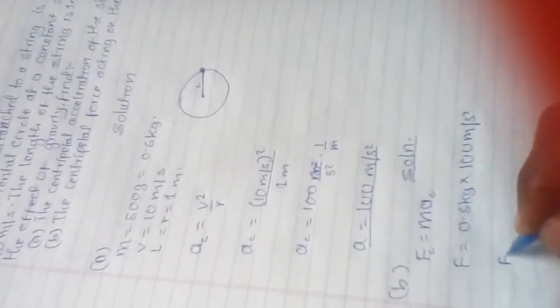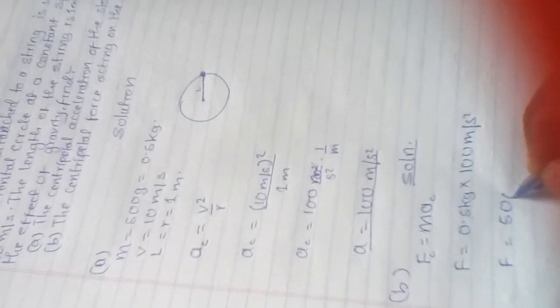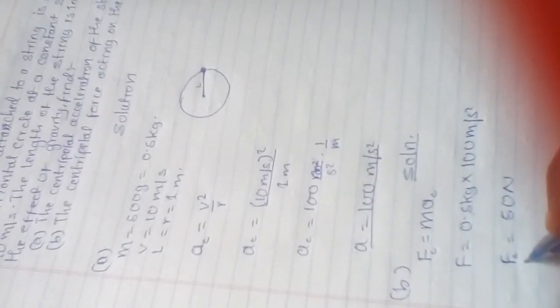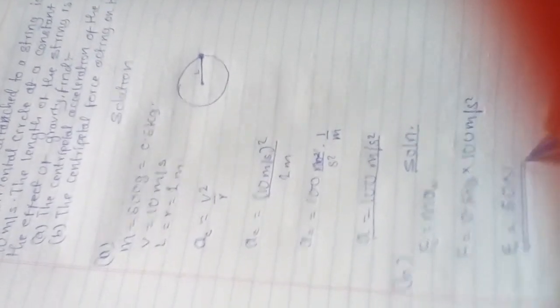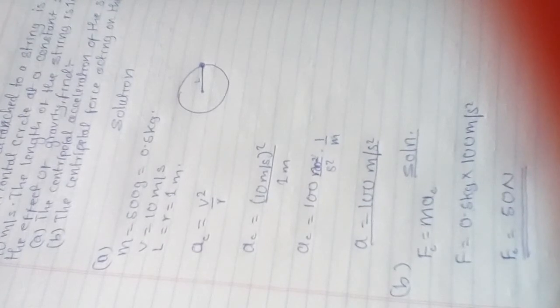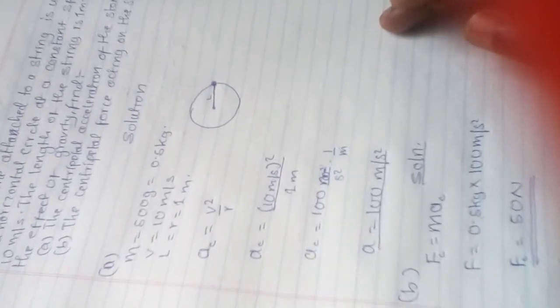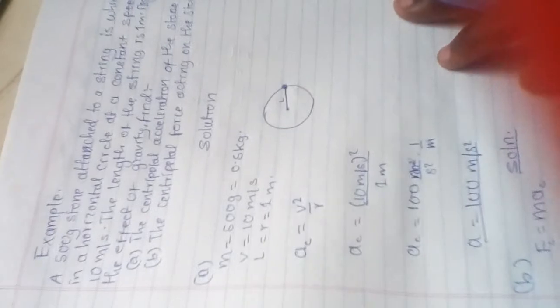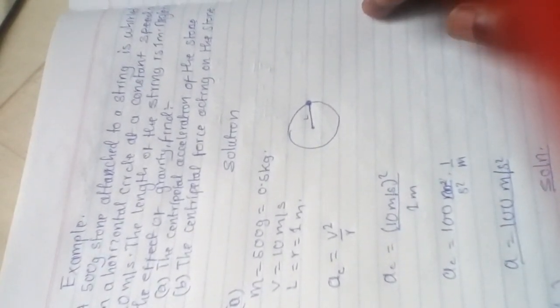So the force equals 50 Newtons. The unit for force is Newton. So the centripetal force is 50 Newtons, and the centripetal acceleration is 100 meters per second squared. That is the solution. Please subscribe and share with others. Thank you.